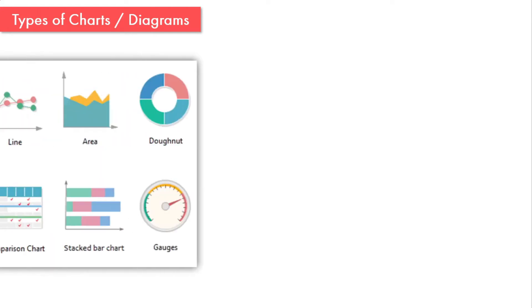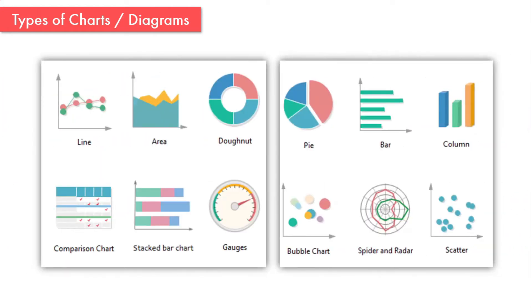There are various types of charts and diagrams such as line diagram, area diagram, comparison chart, stacked bar chart, pie diagram, bar diagram, column diagram, bubble chart, spider and radar, scatter diagram etc.